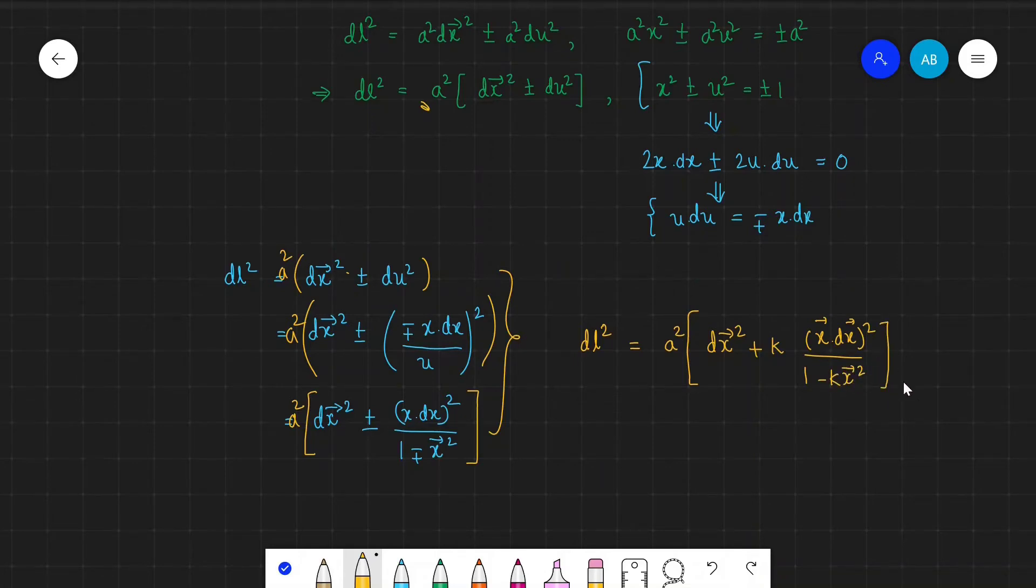Note that we've taken the minus sign here because it is opposite to the sign there. So if I put k equals 0, we get Euclidean three-dimensional space which is flat. If I put k equals 1, we get positively curved spacetime, and if we put k equals -1, we get negatively curved spacetime.